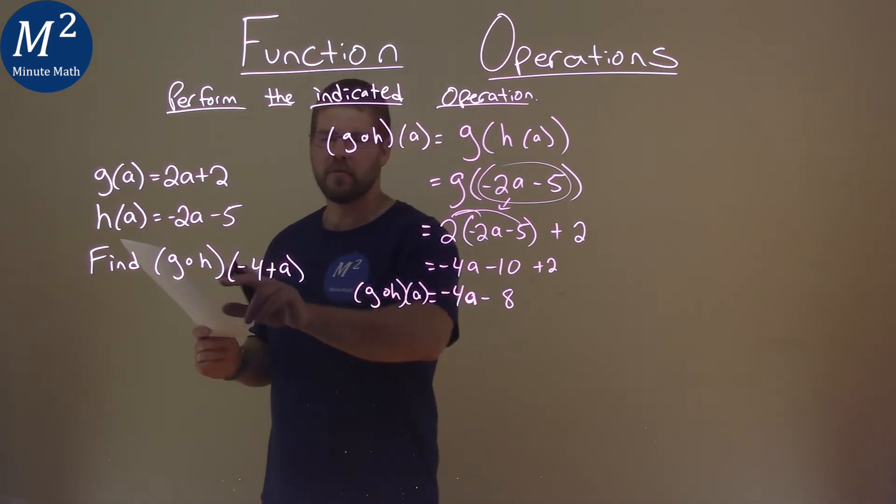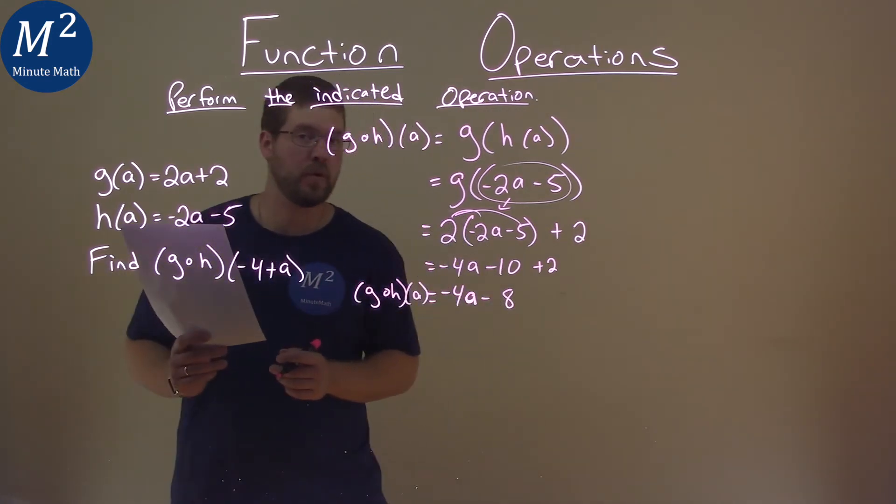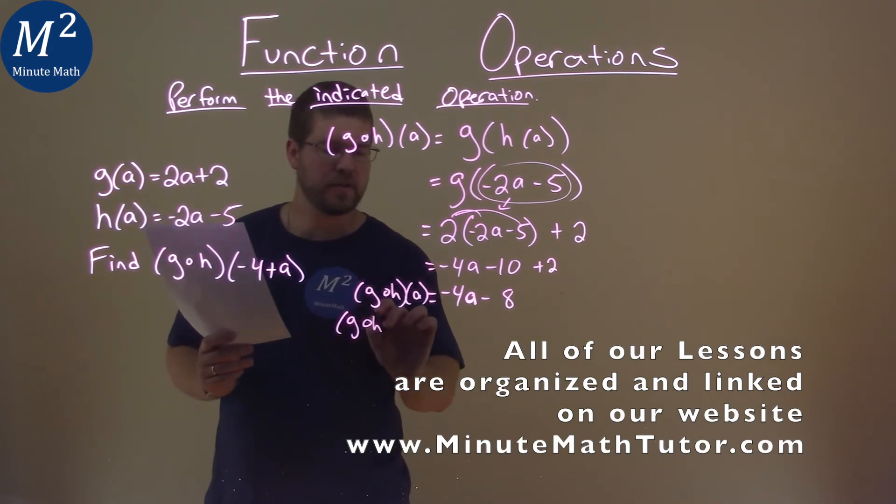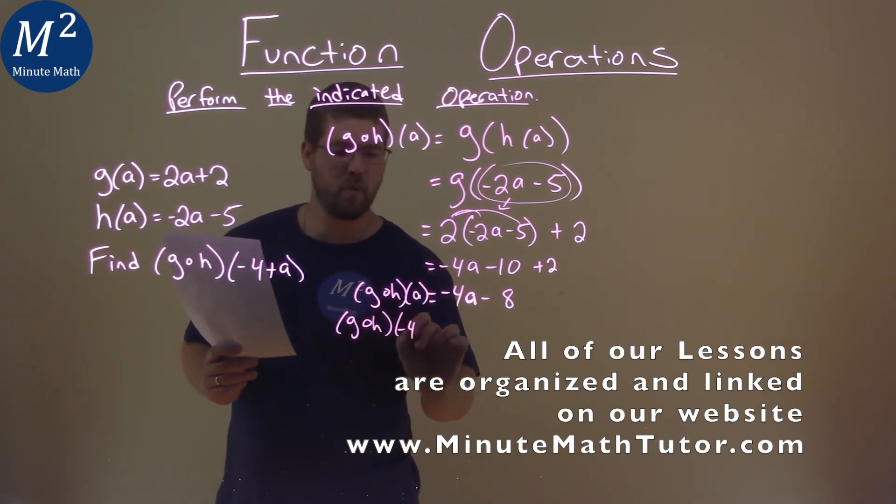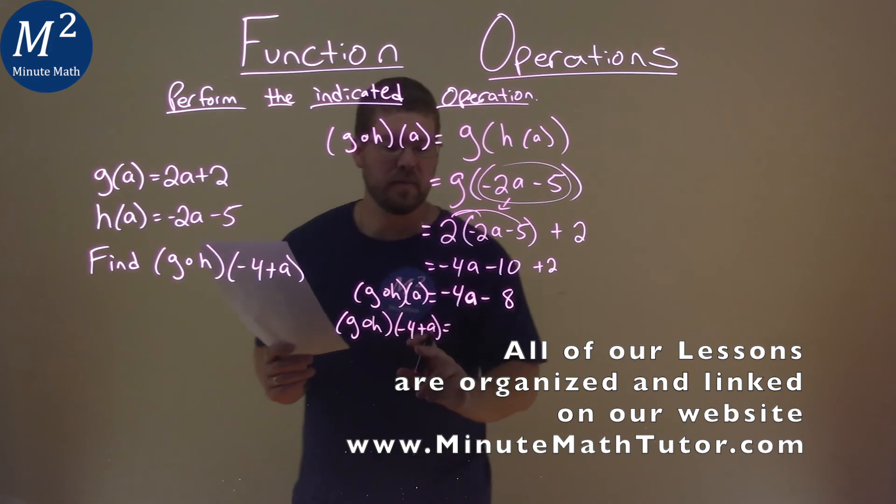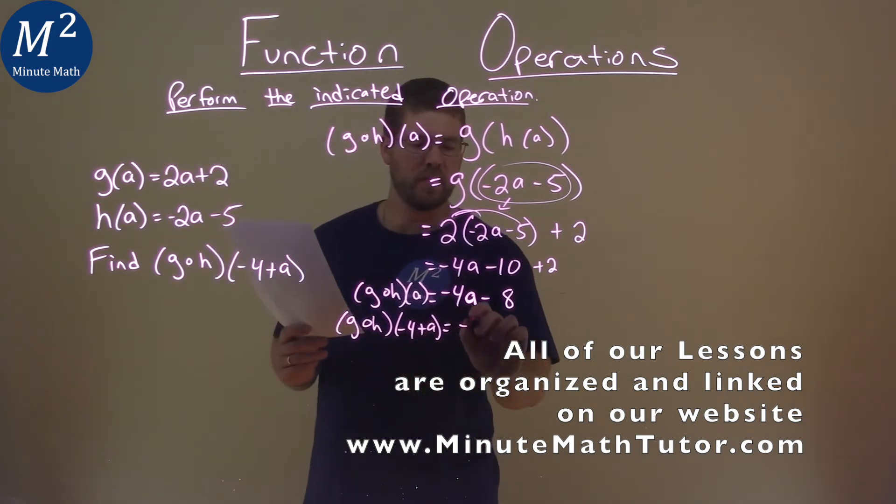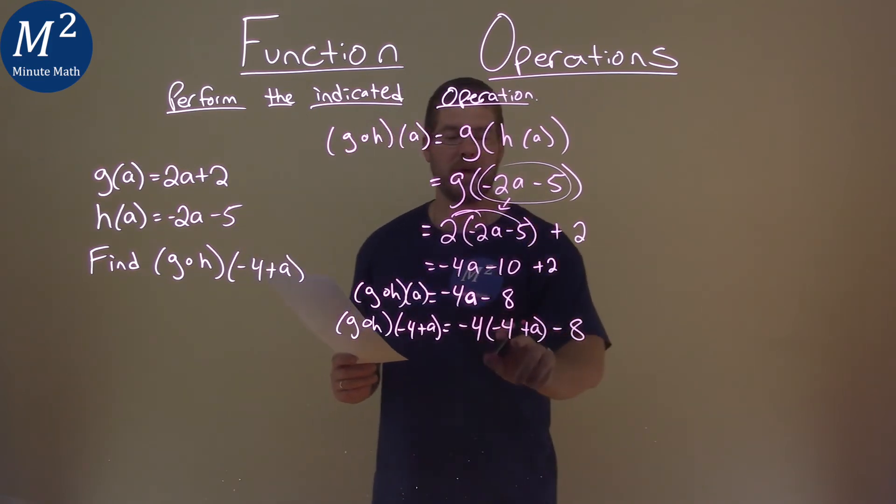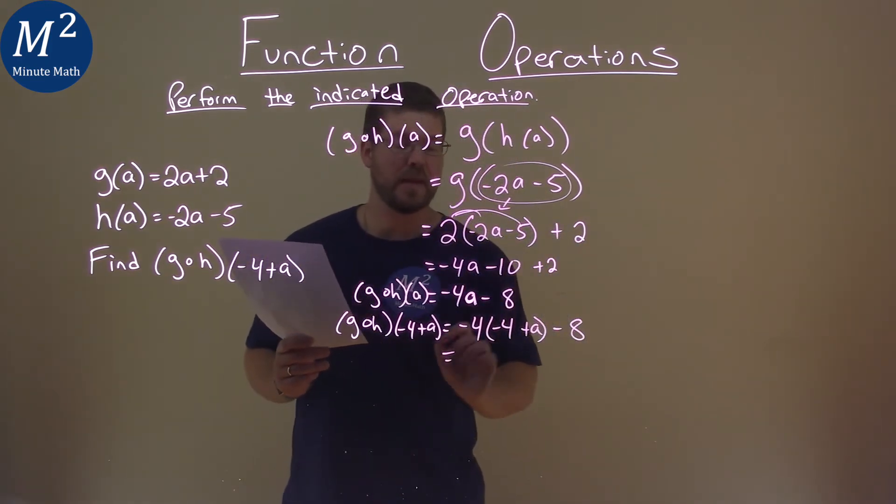But we want to find g of h of negative 4 plus a. So g of h of negative 4 plus a is the same process. Instead of our a value, I'm putting parentheses here. So we have negative 4 times parentheses minus 8, and I'm going to put negative 4 plus a in for where that a value was.